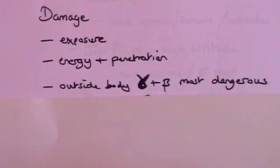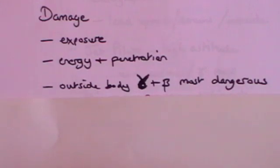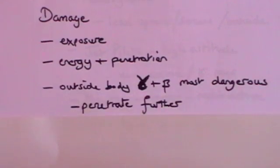The damage will be affected by the energy of the particles — the higher the energy, the higher the damage — and by penetration. You may remember that alpha particles hardly penetrate at all, beta particles much more so, and gamma rays extensively. So outside the body, gamma and beta radiation is the most dangerous, because that can penetrate most easily into your body. Alpha radiation will probably be stopped by your skin, but it will still do damage to your skin. The gamma and beta rays, however, will penetrate further.